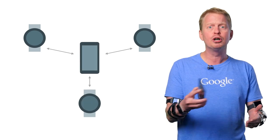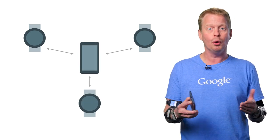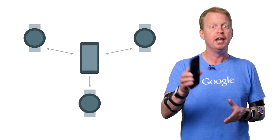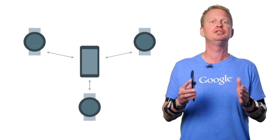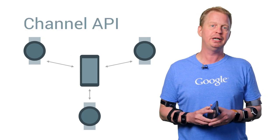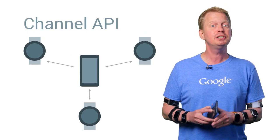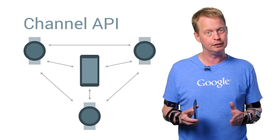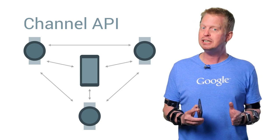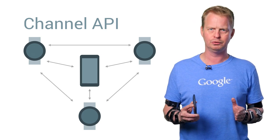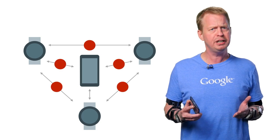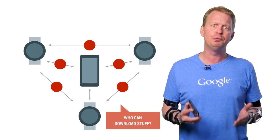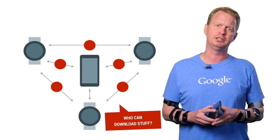This capability allows you to create a network of wearable nodes all connected to a single phone. And since there can be more than two nodes, we are introducing the Channel API in the Wear Data API, which allows you to send large files or even stream data between two individual nodes. But how would you know which node you should communicate with, for example, if you wanted to download something?